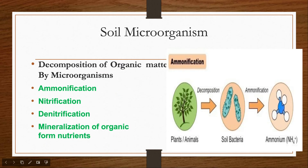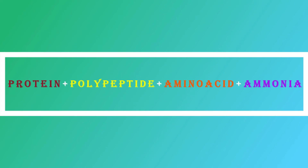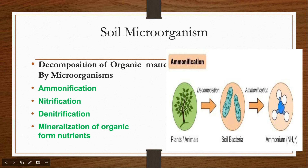Soil bacteria decompose organic matter and are involved in various processes such as ammonification, nitrification, denitrification, and mineralization of organic nutrients. Non-nitrogen-fixing bacteria are involved in these processes. Ammonification is the process of changing organic nitrogenous compounds into ammonia — ammonifying bacteria convert proteins into polypeptides, then into amino acids, and then into ammonia. In nitrification, Nitrosomonas bacteria convert ammonia into nitrite, and then Nitrobacter converts nitrite into nitrate. Nitrate is a plant-available form of nitrogen.